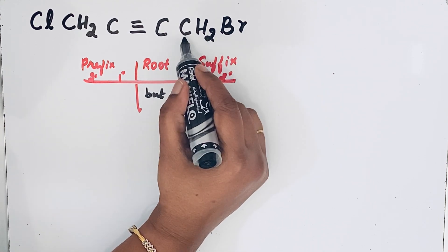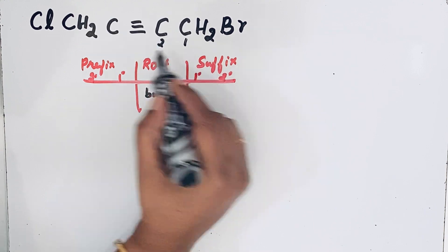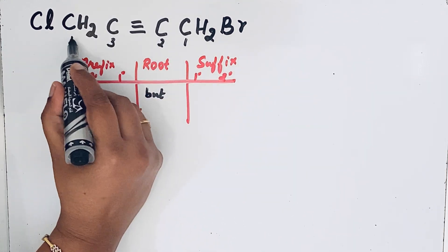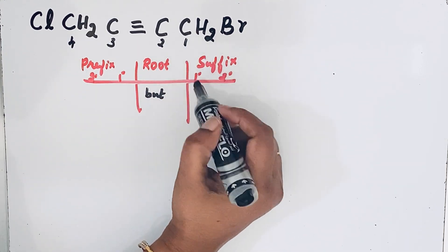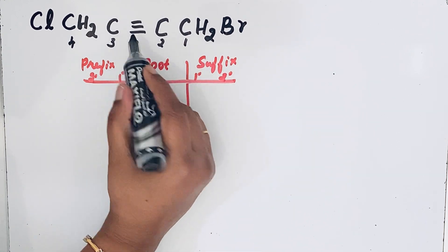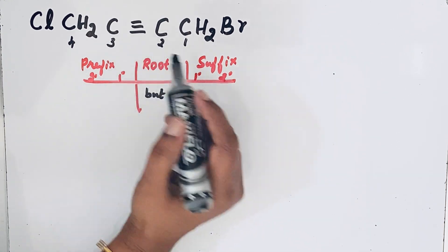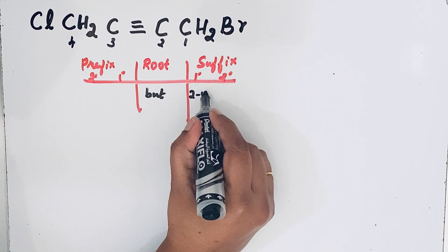So we can start the numbering from here: 1, 2, 3, 4. So for primary suffix, yne is also in the second position. So 2-yne.